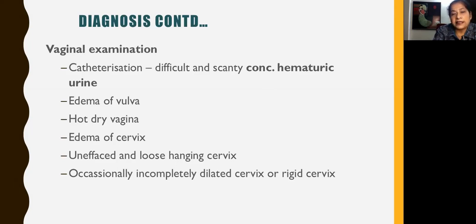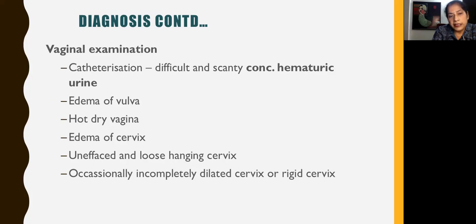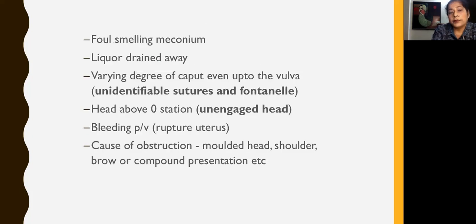The initial step is catheterization of the bladder, which is full. It may be difficult to catheterize because the urethra is compressed — you need to push the presenting part high up, relieve pressure on the urethra, and then catheterize. Scanty hematuria urine may be obtained. There may be oedema of the vulva, a hot dry vagina, and oedema of the cervix. If there is rupture, you can feel a loose hanging cervix, not well applied to the fetal head, and at times the cervix could be unapplied as well. Occasionally you can find an incompletely dilated or rigid cervix responsible for the obstruction. There could be foul-smelling meconium, liquor drained away because of prolonged labour, varying degrees of caput — even up to the vulva — and sutures may be unidentifiable.